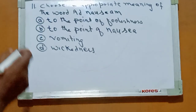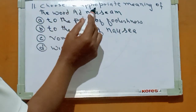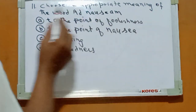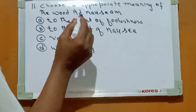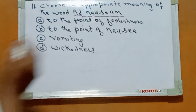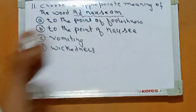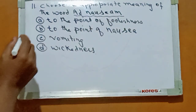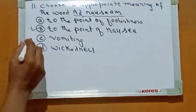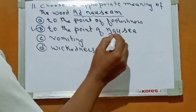Number eleven: choose the appropriate meaning of the word abnosium. The right answer is: to the point of nausea.